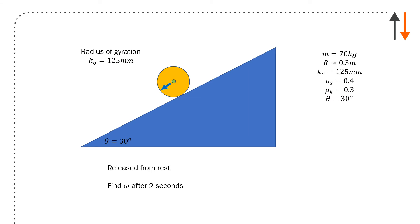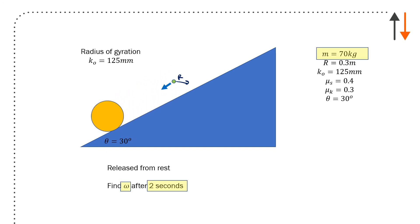Here's another problem — a more straightforward one. I have a cylinder rolling down a ramp at theta equals 30 degrees. Mass of the cylinder is 70 kilograms, radius is 0.3 meters, and radius of gyration is 125 millimeters. The static coefficient of friction is 0.4 and kinetic friction is 0.3. It's released from rest, and you're asked to find omega after two seconds. I have mass, omega, and time — force, velocity, time — so this is a momentum problem.